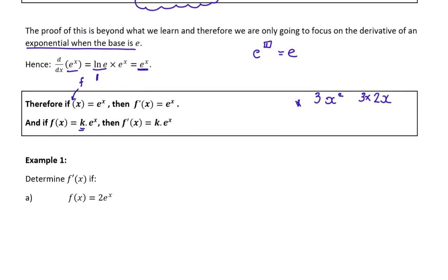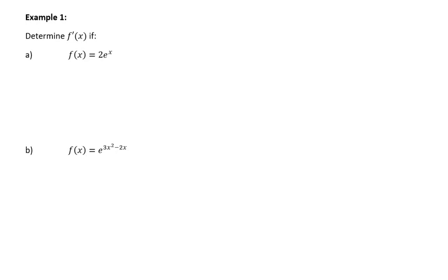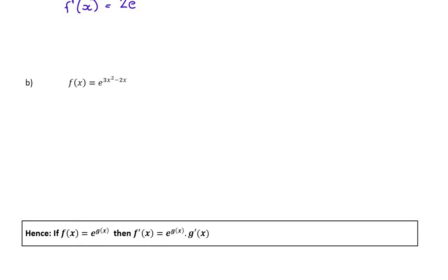So we're going to do a whole bunch of examples. Example number 1: determine f′(x) if f(x) equals 2e to the x. This is really straightforward because the coefficient just comes along for the ride, so it's 2, and the derivative of e to the x is e to the x. So any function with e to the x is actually really easy to differentiate, unless we start making things a little bit more interesting.